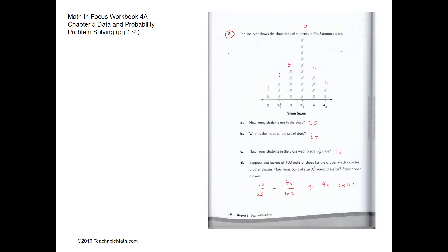Problem solving question two: how many students are in the class? We need to count all data points. There is one student with a shoe size of 2, three students with a shoe size of 2.5, five students with a shoe size of 3, ten students with a shoe size of 3.5, four students with a shoe size of 4, and two students with a shoe size of 4.5. Adding 1, 3, 5, 10, 4, and 2 gives 25 students in the class.